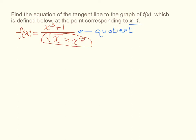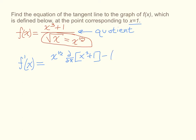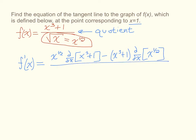So now we can start finding our derivative. f prime of x equals — the quotient rule states that we will start with the denominator, x to the 1/2 power, and multiply that by the derivative of the numerator. From that, we will subtract the numerator and multiply that by the derivative of the denominator. And we will take all of that and divide it by the denominator squared.